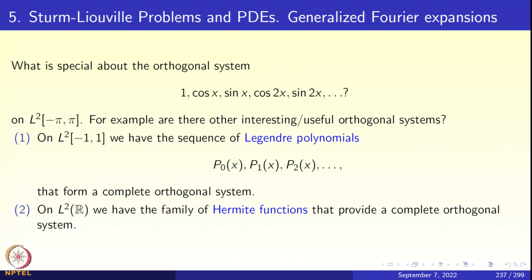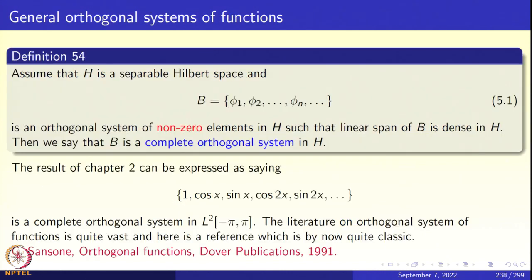On L2 of the real line, we have the Hermite functions, which we encountered in the chapter on Fourier transforms. These Hermite functions form an orthogonal system of functions. Let us look at other examples, but before we do, let us give a general definition.